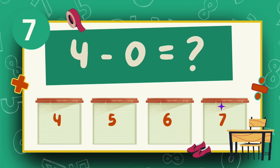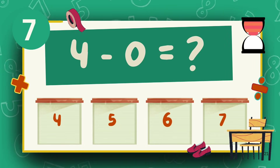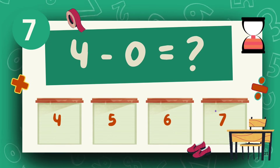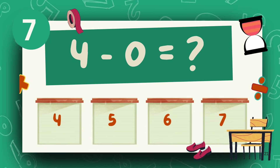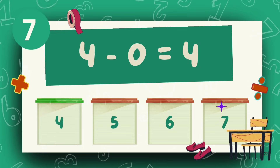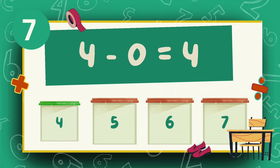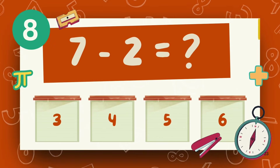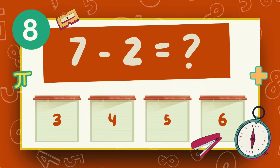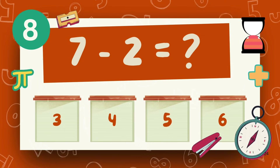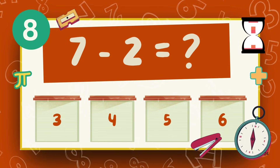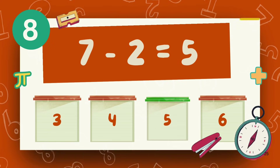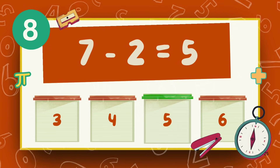What is 4 minus 4? The answer is 4. What is 7 minus 2? The answer is 2.